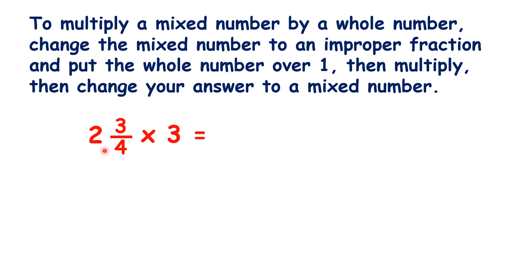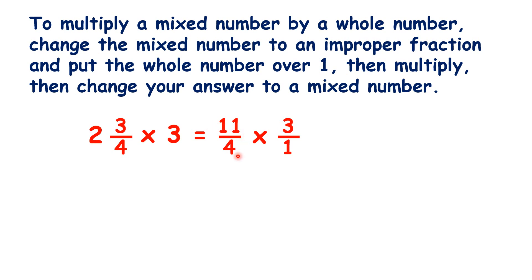To start, we need to change our mixed number two and three quarters into an improper fraction, so that's 11 quarters. We're multiplying by three, and most teachers want you to write three over one. That's to remind you that you only multiply the numerator by three, not the denominator. If you were to multiply the denominator by three as well, all you would be doing is finding an equivalent fraction.